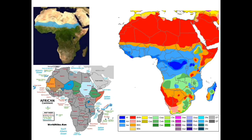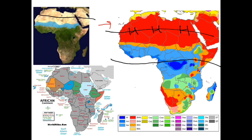Looking at a climate map of Africa, the Sahara Desert is located at around 30 degrees north latitude — a high pressure zone — and that high pressure zone is creating the Sahara Desert. The ITCZ, our low pressure system, sits further south and is creating a lot of rain in the tropics of Africa. Down in the south, another subtropical high creates desert regions there as well.